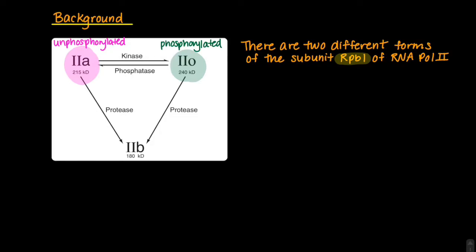The other form of RNA polymerase, named 2B, lacks this C-terminal domain and will therefore not be focused on in this video.